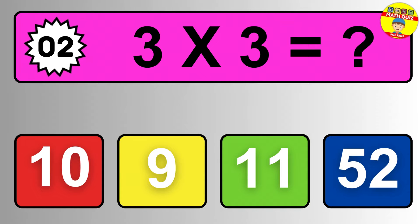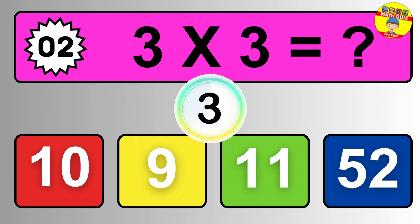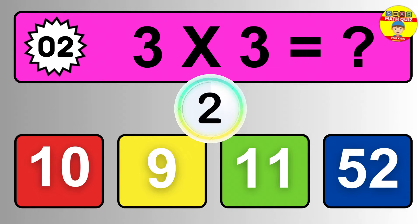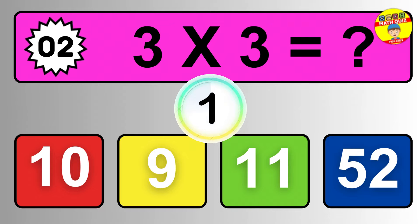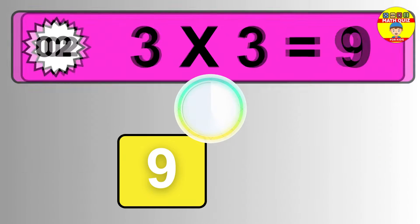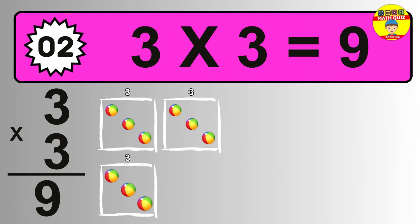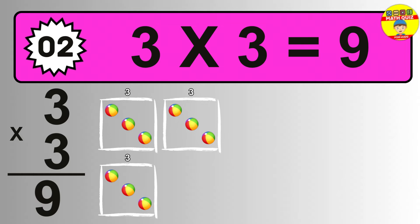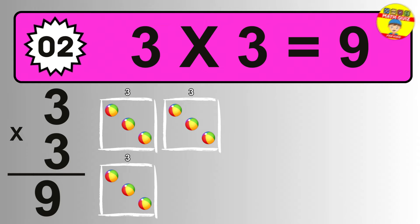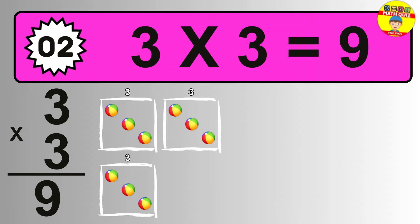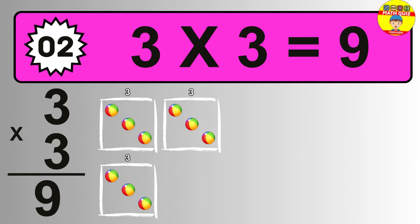Question two. Three times three equals what? The answer is three times three is nine. To calculate, we have three groups with three balls each one. So how many balls do we have? Nine balls.